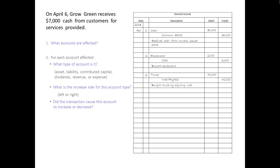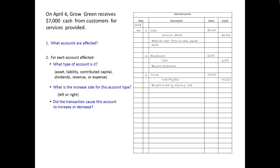On April 6, Grow Green received $7,000 cash from customers for services provided. Accounts affected: cash and service revenue. For cash, what type of account is it? Asset. What's the increased side for an asset? Left. Did cash increase or decrease? It increased, so we'll use the increase or normal side — the left.